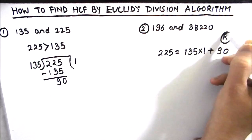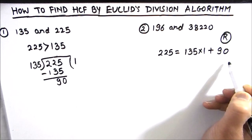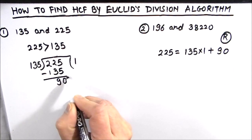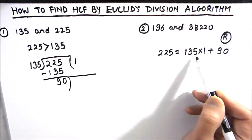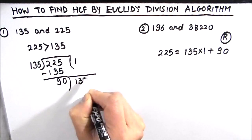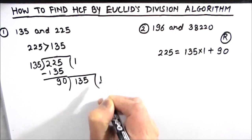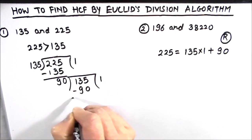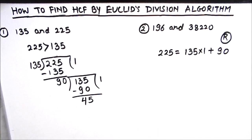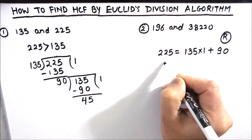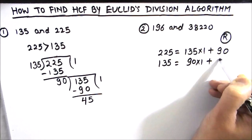90 is our remainder. We keep dividing until we get remainder 0. Now this remainder 90 acts as the new divisor, and the new dividend is 135. Dividing 135 by 90: 90 times 1 is 90. Subtracting: 5 minus 0 is 5, and 13 minus 9 is 4. So we can write 135 = 90 × 1 + 45.